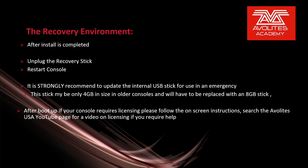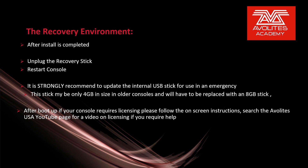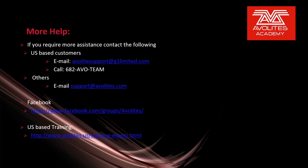After booting up, if your console requires licensing, please follow the on-screen instructions. Search the Avolites USA YouTube page for a video on licensing if you require more help. For US-based customers, you can email AvaLightsSupport@g1limited.com or call 682-AVO-TEAM. If you're not a US customer, you can email support@avolights.com for technical support. If you're on Facebook, you can go to the Avolites Programmer Users Group. You can also find US-based trainings on avolights.us/training-events.html.